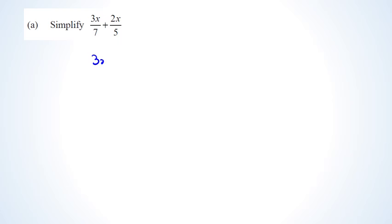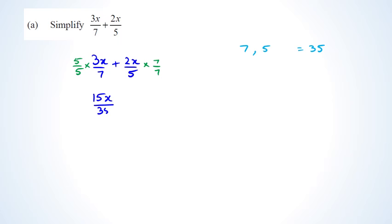With this question you've been asked to simplify — that means write it with the same denominator. The denominators are 7 and 5, and the lowest common multiple is 35. Multiply the first fraction's numerator and denominator by 5, and the second by 7. That gives 15x over 35 plus 14x over 35. With the same denominator, I combine them to get 29x over 35, which gets you an achieved.